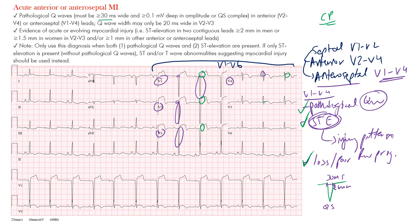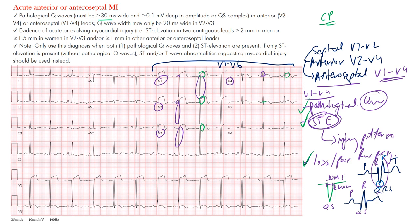Remember, Q waves are the first negative deflection of a QRS complex. So if you have a complex with a P wave, then a QRS that starts immediately with an upward R wave followed by an S wave, there's no Q wave there. A Q wave would be the first negative deflection before the R wave. The entire complex representing ventricular depolarization is called the QRS complex.